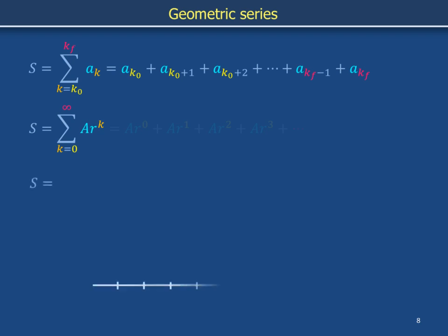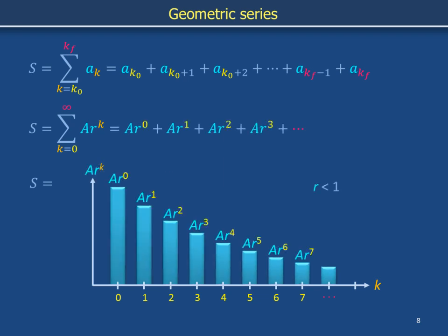We enumerate k starting from 0 in increments of one integer step and increasing without end. If r is less than 1, each term in the sum is a factor r smaller than the previous.